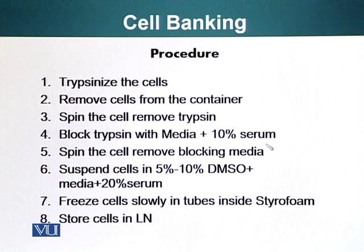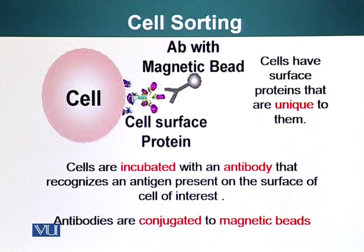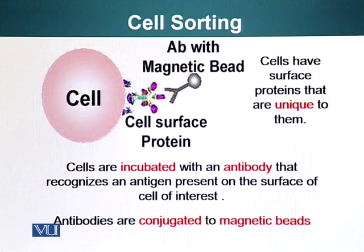Another technique is how you can sort cells. We have talked about using restrictive media that will allow only certain cell types to survive while other cells perish. Another way to obtain pure cultures — a single type of cell from a source which has many different cells — is to use magnetic cell sorting.